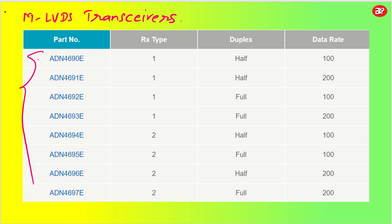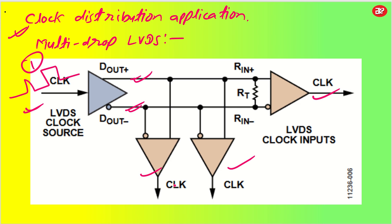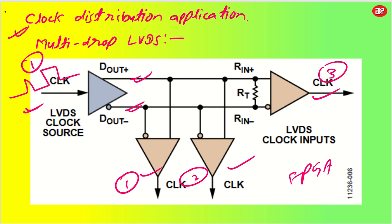There are a number of LVDS or MLVDS — multipoint low voltage differential signaling — configurations. You can see we have half duplex type, full duplex type, with various numbers of receivers and transmitters. Now let us talk about clock distribution applications. We have one clock source, and this LVDS clock source will be converted into differential signal D plus D minus, and then three clocks will be received. This is how you distribute one single clock to one, two and three — three clock sources for three different purposes in your FPGA circuit.